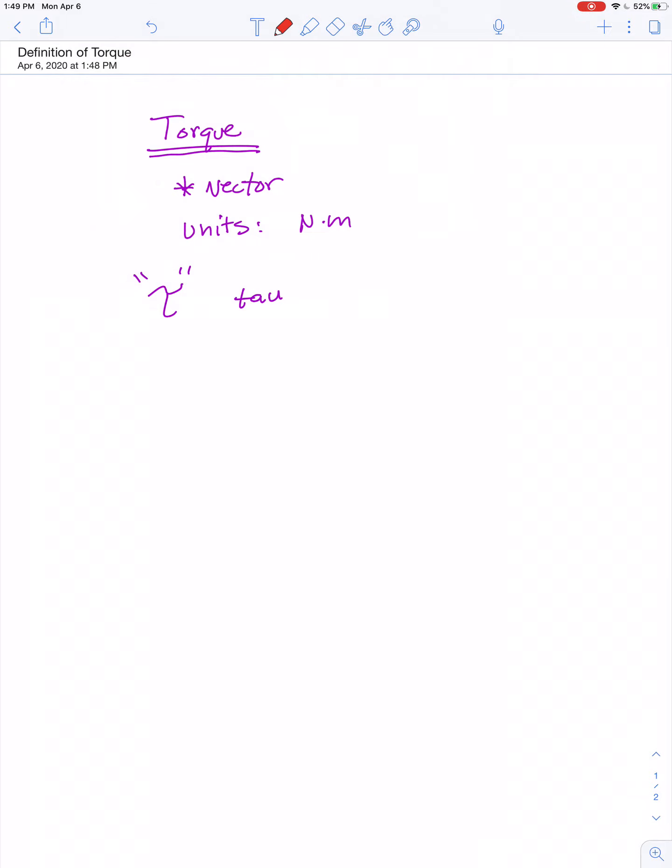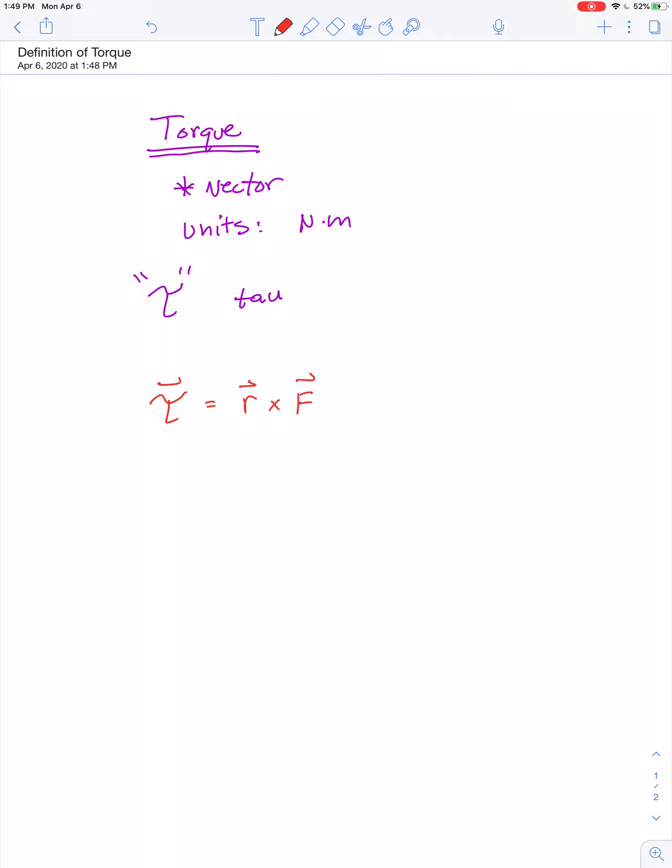Here's a formula to help define torque. We say torque as a vector is equal to a lever arm cross product with some amount of force: τ = r × F.